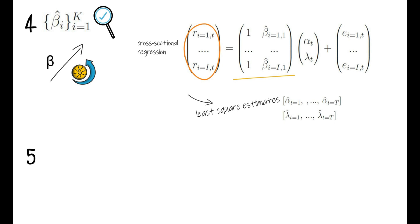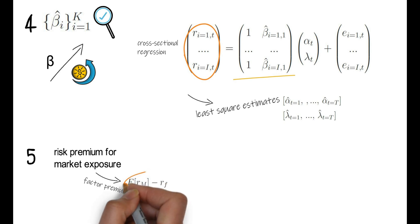Step 5: Fama-MacBeth defined the risk premium for market exposure, so the factor premium for a unit exposure to market risk, here the expected excess return as follows: they simply take the sample average of all calculated lambda t-hats.